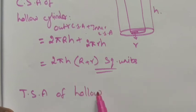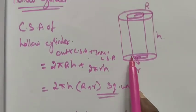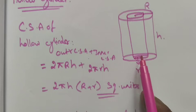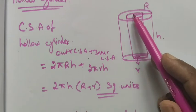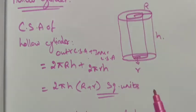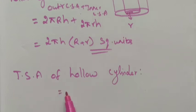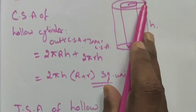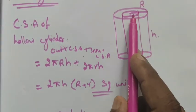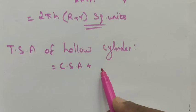Total surface area means we have already found the curved surface area — outer and inner. Now we also need to find the area of the rings: at the bottom we have one ring and at the top we have another ring. So we have to add the two rings as well. The area of a ring is the biggest circle minus the smallest circle — that is, the area of two rings.